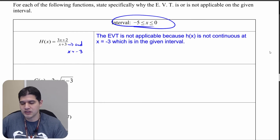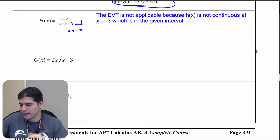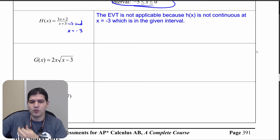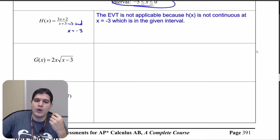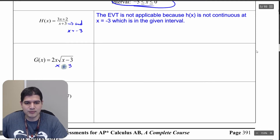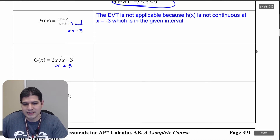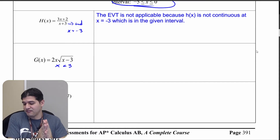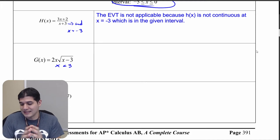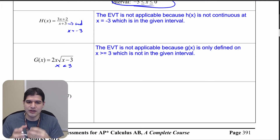Moving ahead to our next problem — we need to be very specific about where these functions are defined. For g of x, think about where the square root of x minus 3 is going to be defined. When x is less than 3, we're going to have negative values under the square root, which are not real numbers, so it's not defined there. Since our interval is between negative 5 and 0, the extreme value theorem cannot be applied because g of x is only defined when x is greater than or equal to 3.